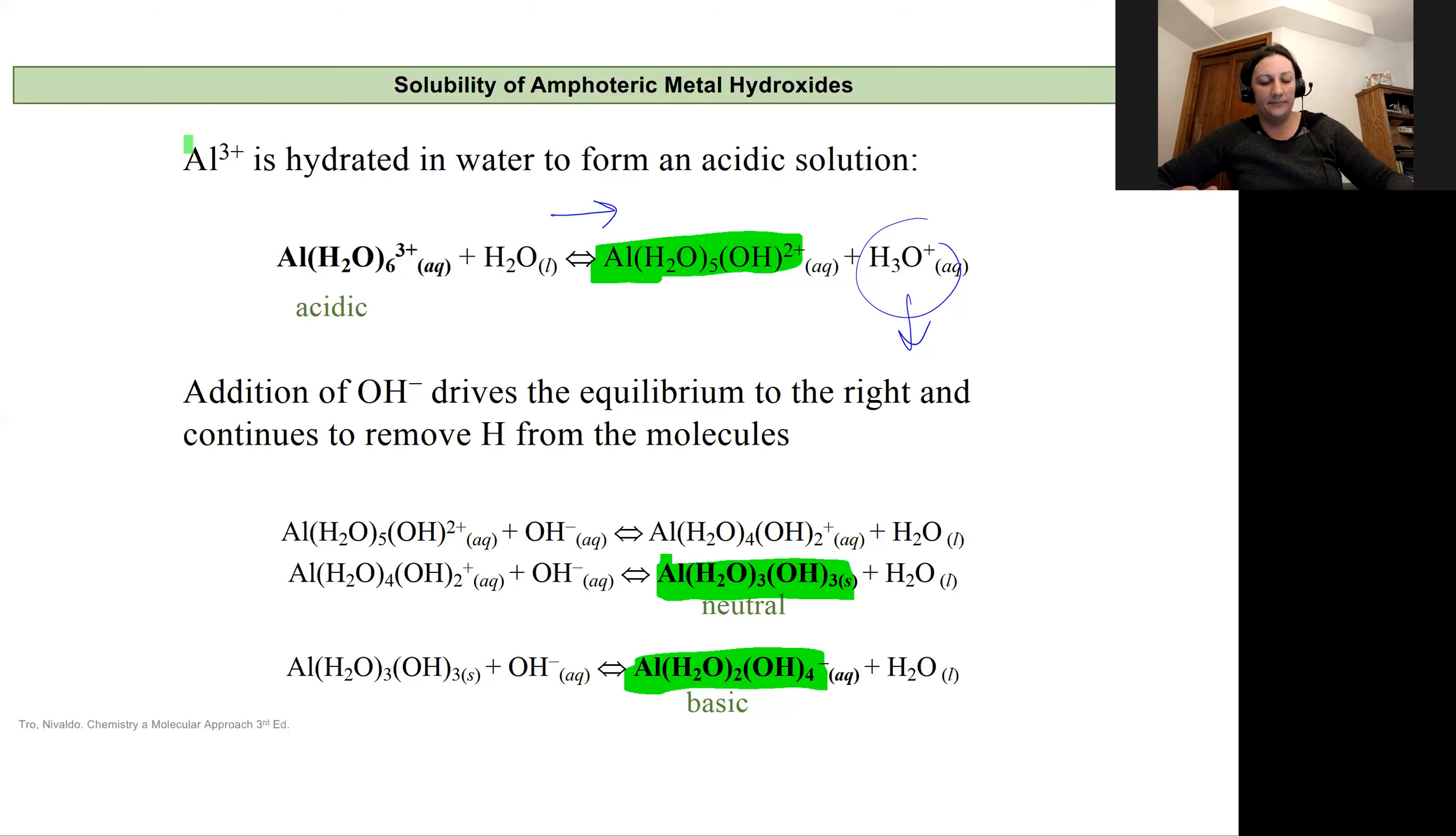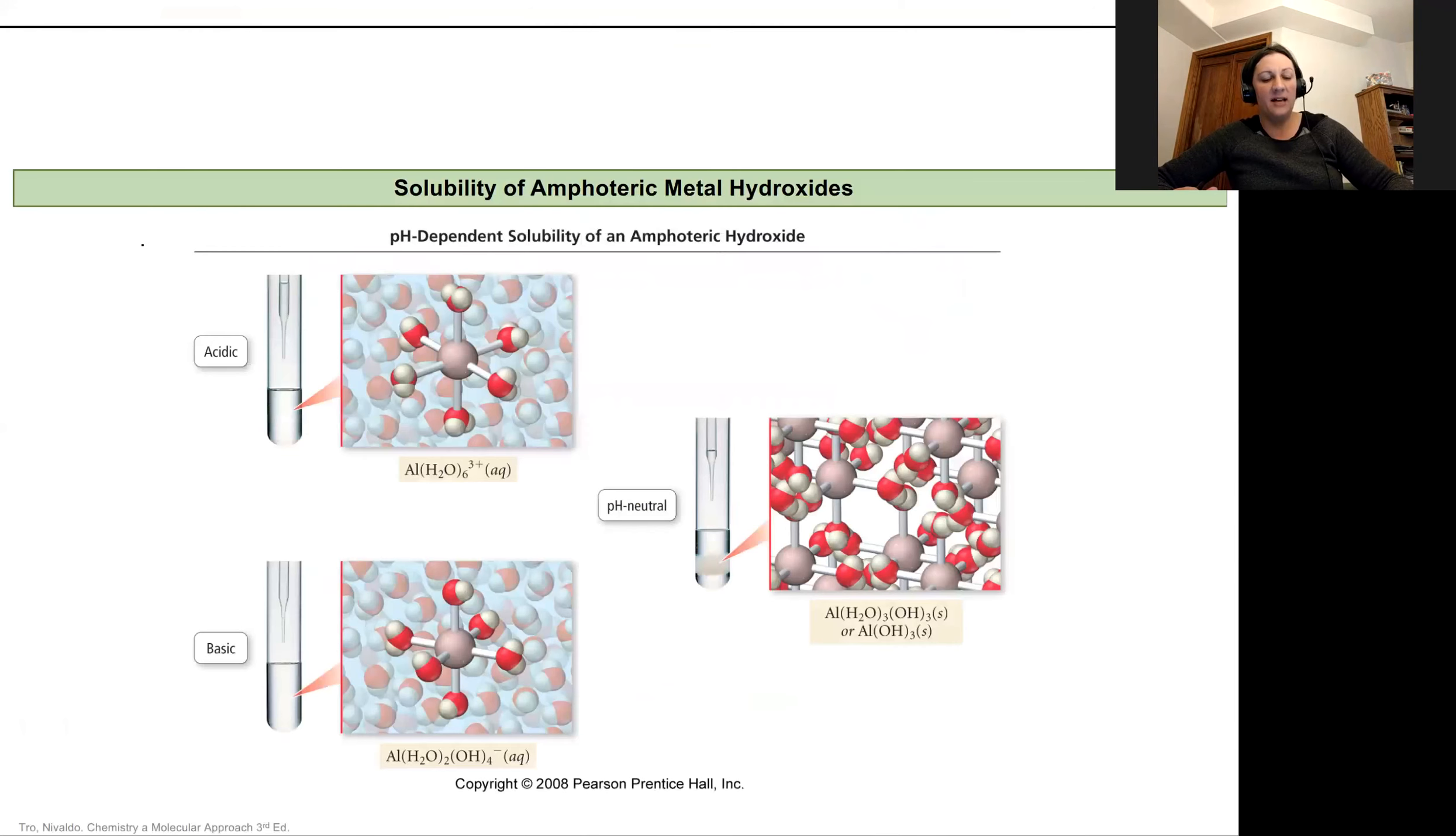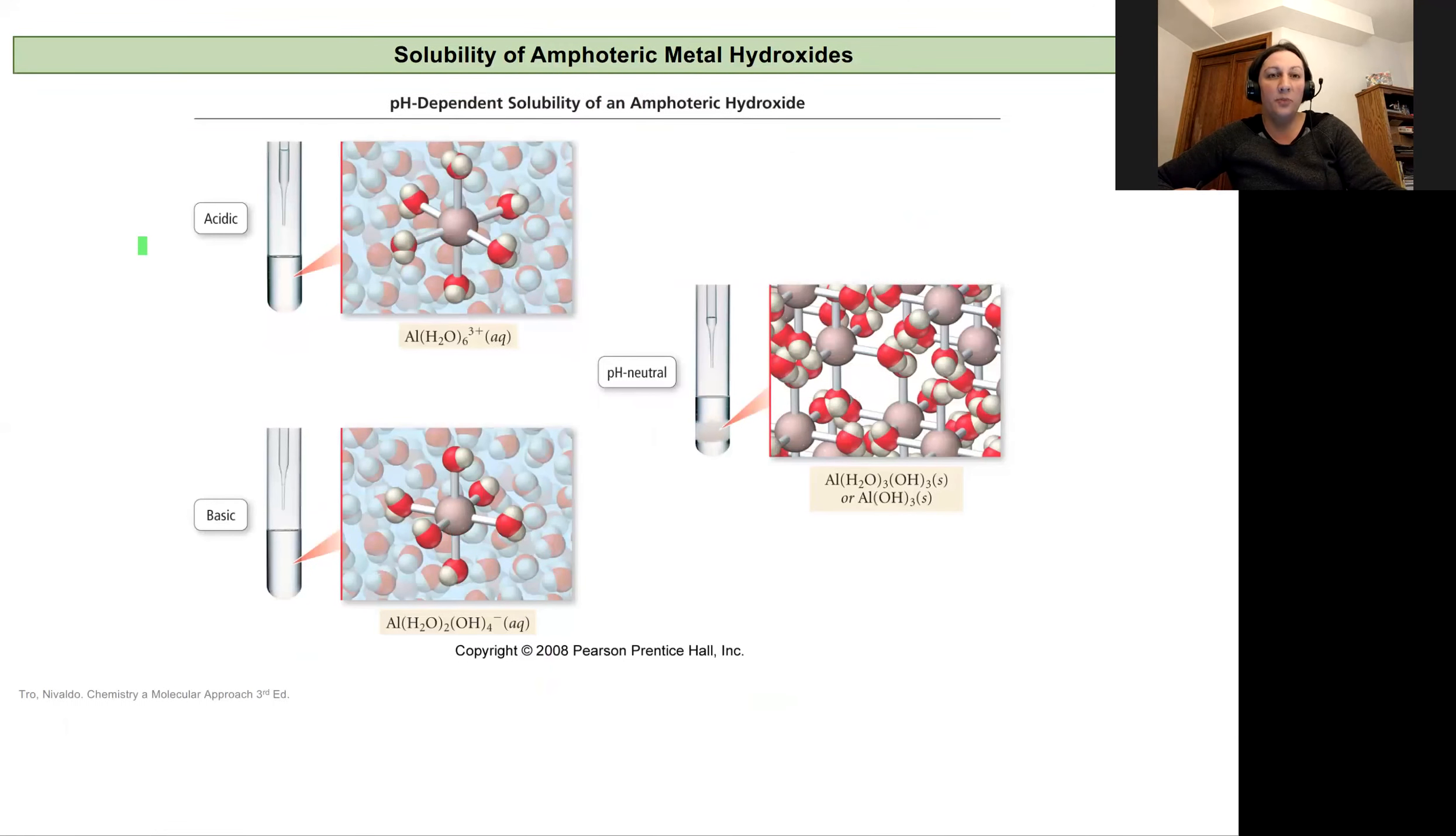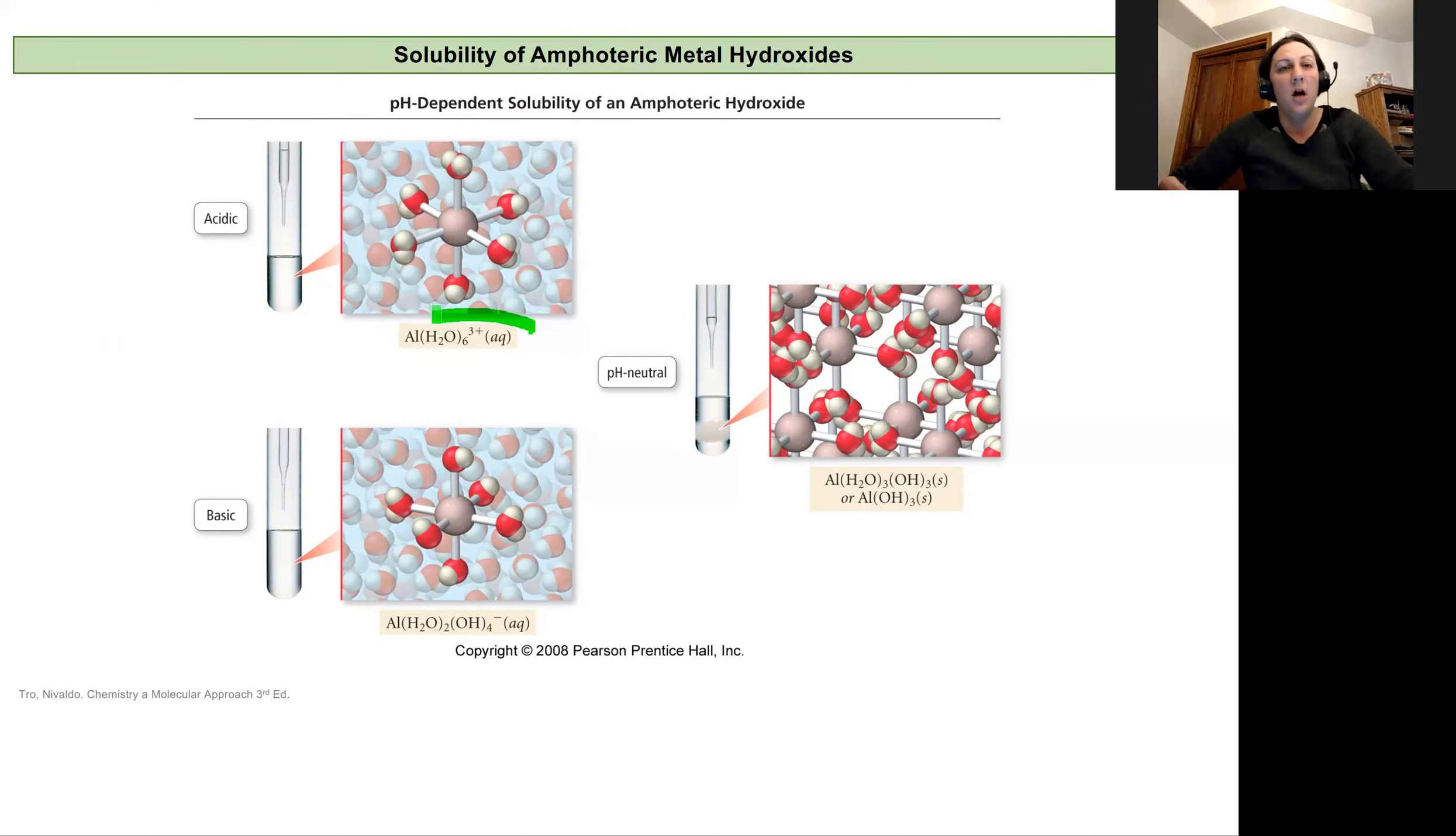I just want to move past this real quick to this. And so because of that, we actually see different solubility at different pHs for this aluminum. At a really acidic pH, where we have aluminum coordinated by just waters, we're going to see that it's soluble in water.